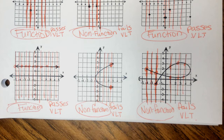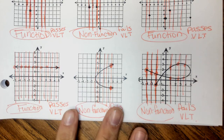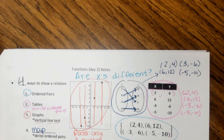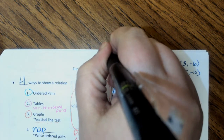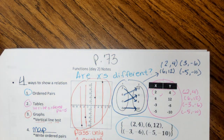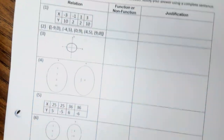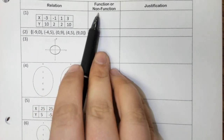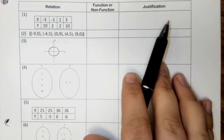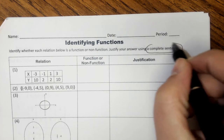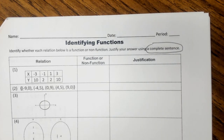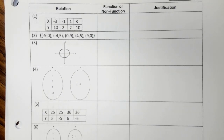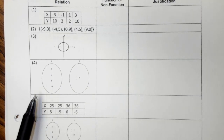That is all of the notes for this page — this is page 73 in your packet. Take a look at page 74, which is the homework for this lesson. In the homework you'll see a lot of different relations. You need to determine if each one is a function or a non-function, and then justify it using a complete sentence. Some of the arrows in the mapping diagrams are really hard to see, so I'll walk you through them.